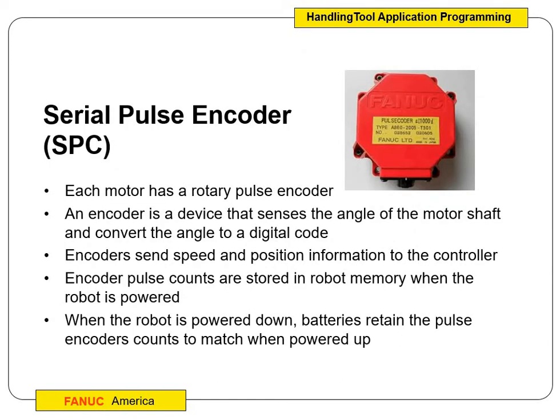This is the pulse coder. When we walk over and look at the big robot, you'll see it sitting on the outside. It's a rotary encoder — SPC, or serial pulse encoder — and it senses the angle of the shaft. As the robot turns and rotates, it can detect the shaft angle, giving us our coordinate system and speed. These encoders send speed and position back to the controller. Think of the controller like your desktop computer — it runs everything, and the peripheral stuff like keyboard, mouse, and monitor controls it, while the motherboard handles everything inside.